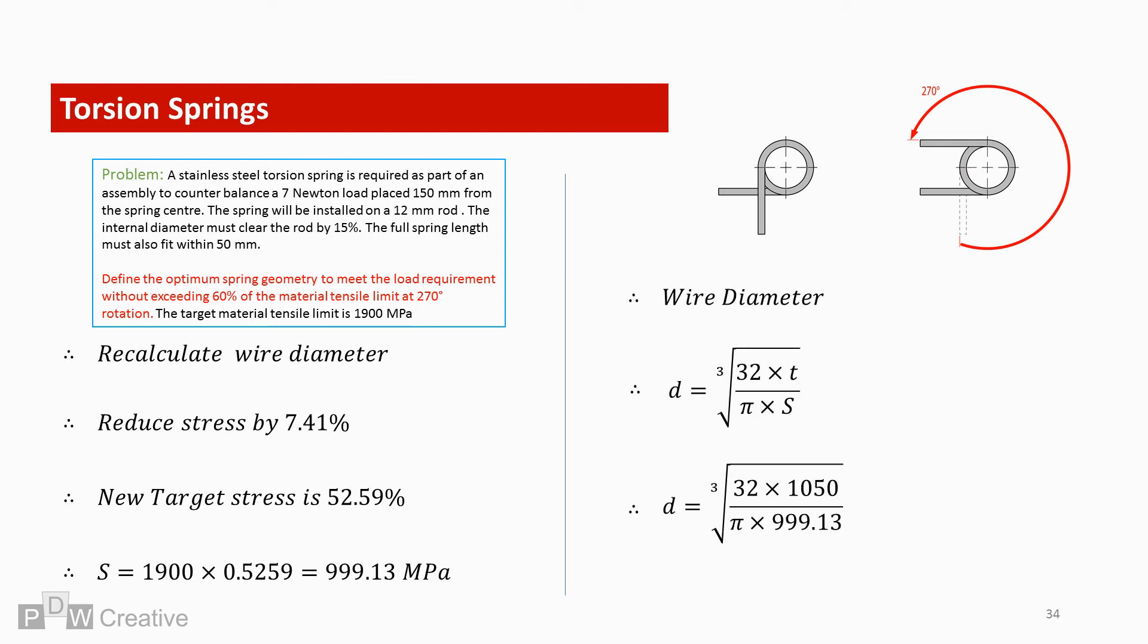Let's start with the wire diameter. We plug the revised stress into the equation. And based on the new input, the revised wire diameter is 2.2.